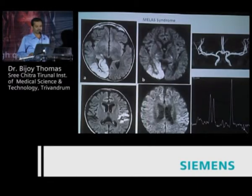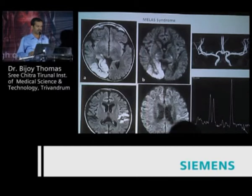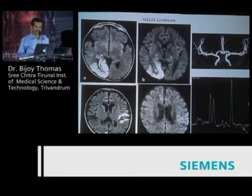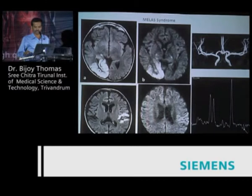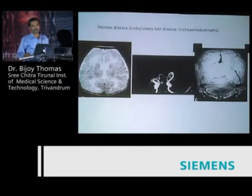In MELAS syndrome, you can detect lactate on spectroscopy, but the key question is where to place the voxel. If you place it in an infarcted area, lactate will be present anyway. However, if you see lactate in normal-appearing gray matter or white matter, that suggests the etiology may be MELAS in the correct clinical and MR imaging scenario.